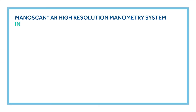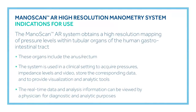Manoscan AR High Resolution Manometry System, Indications for Use. The Manoscan AR system obtains a high resolution mapping of pressure levels within tubular organs of the human gastrointestinal tract.